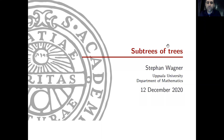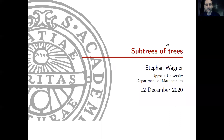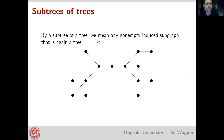My talk today will be about aspects of subtrees of trees, and specifically a quantity called the mean subtree order. It will be a nice example of how some rather old conjectures took a while to get started, but recently there has been a lot of progress on those. Let me start by saying what I actually mean by subtrees and what I mean by mean subtree order.